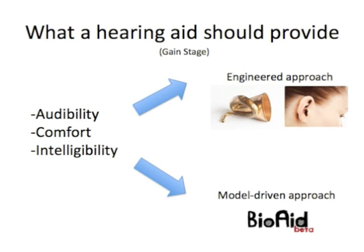You have to be careful when providing gain that you don't over-amplify sounds that are already audible, and you should maintain the cues that give you speech intelligibility. There are two ways of doing this: an engineered approach or a model-driven approach. Standard hearing aids on the market use the engineered approach, which has given us advancement from the ear trumpet through to the modern all-singing, all-dancing hearing aid. The general process is: measure a listener's sensitivity, apply gain in certain frequency regions, then use compression to prevent over-amplification. Fast compression doesn't sound particularly pleasant, so you mix in a slower compression to complement it, and you can refine further with look-ahead compression.